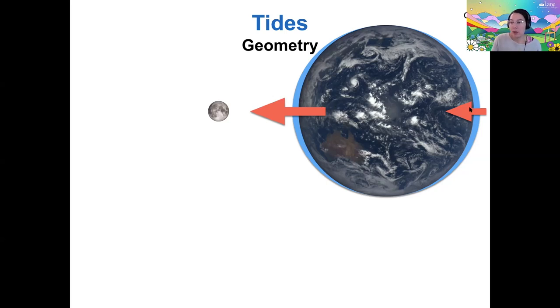And it also bulges out on the side farthest away. And that might seem weird, but it's not just the water that's feeling this differential force. It's also the Earth itself. So you can think of the far side of Earth being pulled a little farther than the far side water. And so that's why there's a bulge on the far side as well.